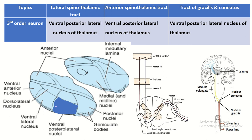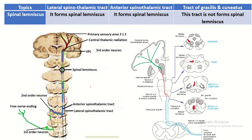The third order neuron is the same for all three tracts: the ventral posterior lateral nucleus of the thalamus. The thalamus is a large collection of gray matter present in the dorsal part of the diencephalon. This group of nuclei known as the ventral posterior lateral nuclei receives and presents the third order neuron for all three ascending tracts.